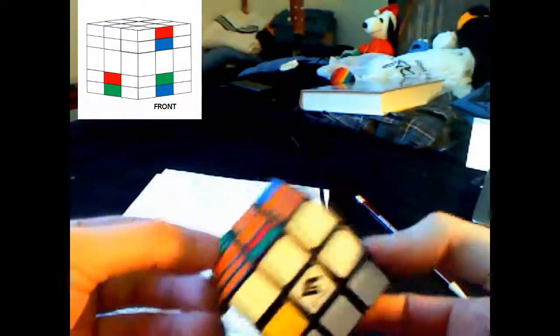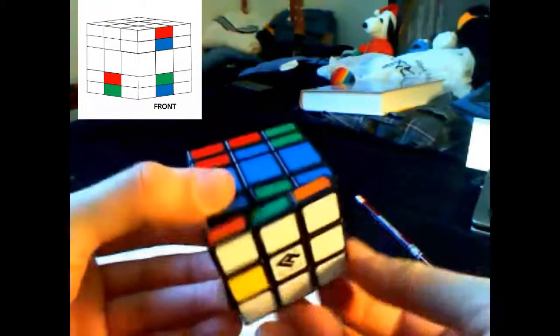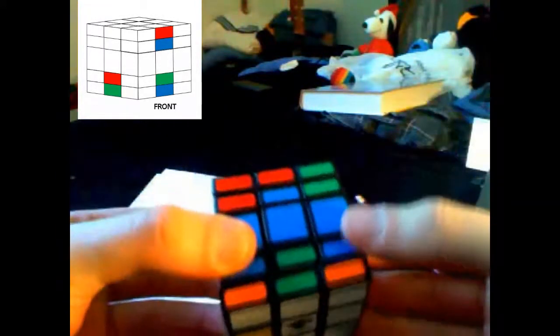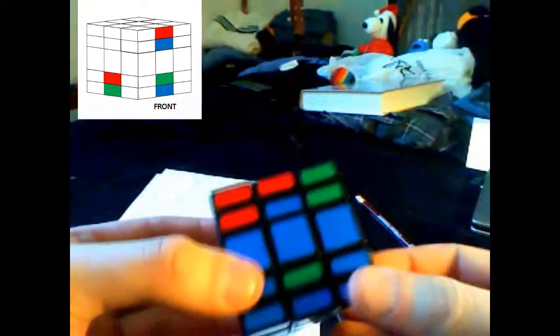What we're going to be looking for when solving for the edges is two unsolved edges like this, where this first edge's bottom half can go into this second edge's top half. And we're going to have one unsolved edge above the second edge. In this case, we're going to do this algorithm.